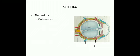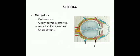The sclera is pierced by a number of structures: the optic nerve, which pierces it inferomedial to the posterior pole of the eyeball; the ciliary nerves and arteries, which pierce it around the entrance of the optic nerve; the anterior ciliary arteries derived from muscular arteries to the recti, which pierce it near the limbus; and the four venae vorticosae or choroid veins, which pass out through the sclera behind the equator.